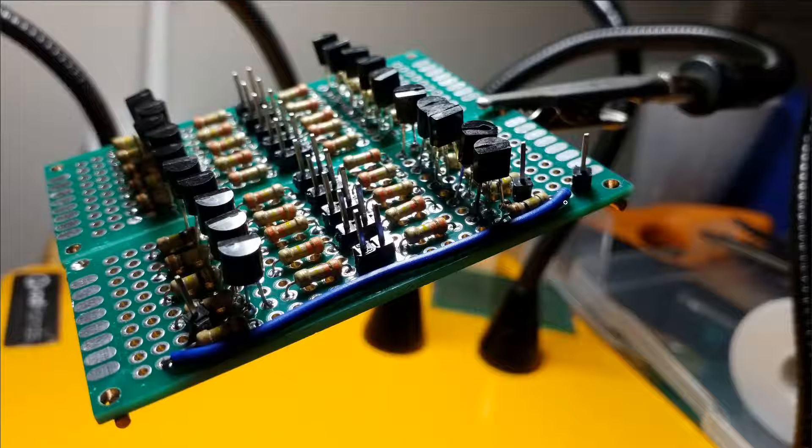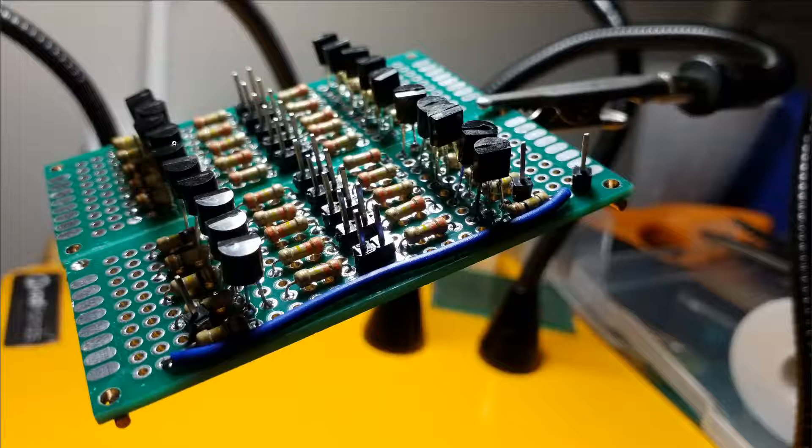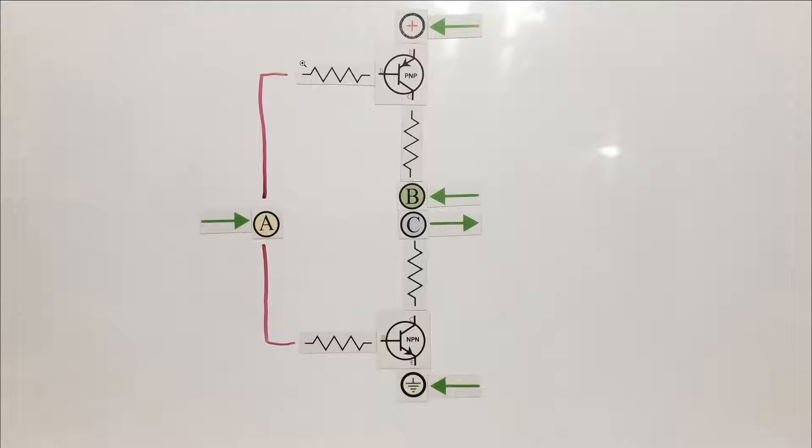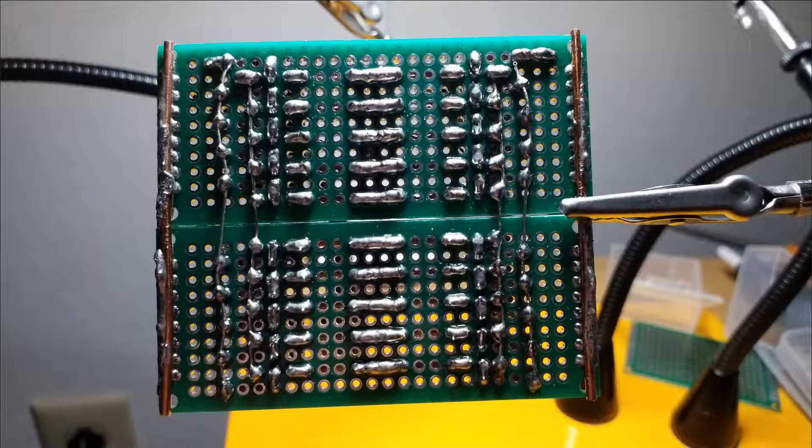This pin here is the control, which is jumpered to both sides because I've got the PNPs and the NPNs. And the control signal goes on the bases. So here the control signal comes in, it's bridged across and then bussed all the way down.